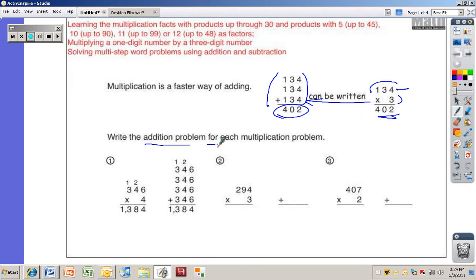Write the addition problem for each multiplication problem. 346 times 4, they did the multiplication right here, and 346 written four times added together is the same idea as multiplication because multiplication is repeated addition. All right, let's try this next one together.